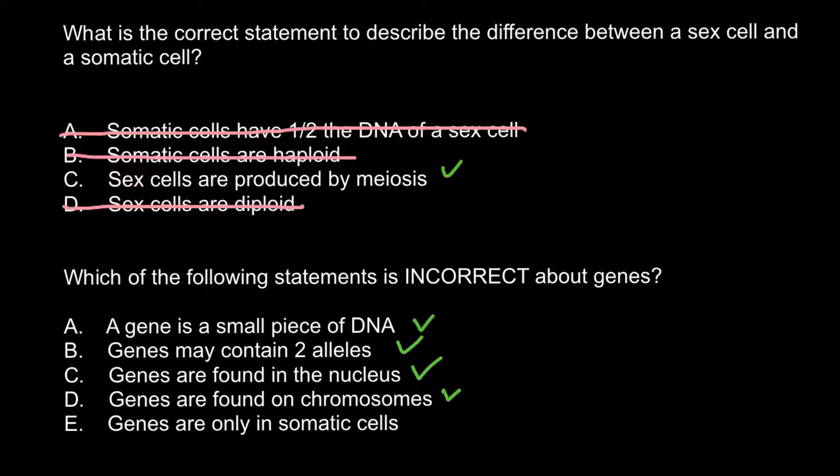Answer E: Genes are only in somatic cells. This is not true because genes can also be found in sex cells. The number of genes in sex cells would be half the number found in somatic cells, because sex cells are haploid. So the correct answer is Answer E.